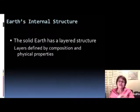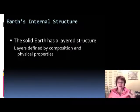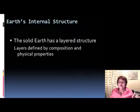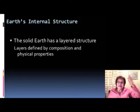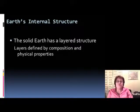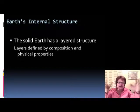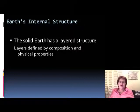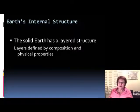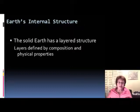The last thing we have to talk about in this chapter is the earth's internal structure. When the earth formed as a planet, it was completely uniform — every element was completely randomly distributed. But because of the amount of radioactive elements present, they warmed the whole earth up and it became completely molten.